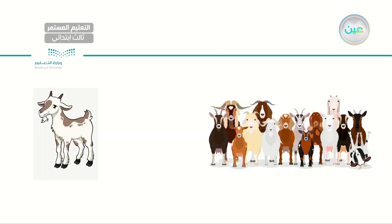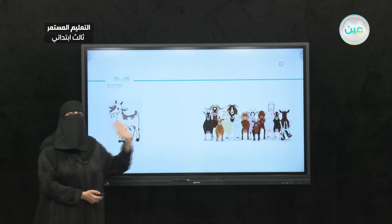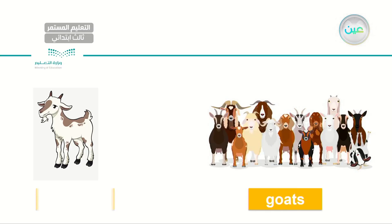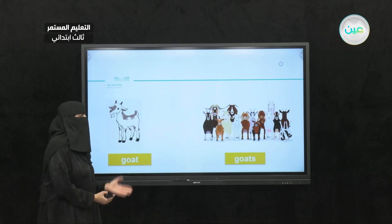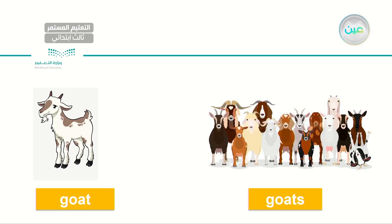Now let's have another animal. Here I have one and I have more than one, so I have singular and plural. On your left, I have a goat. A goat. While on your right, I have goats — plural. So let's read together: goat. Goats. Very good, my dear student.